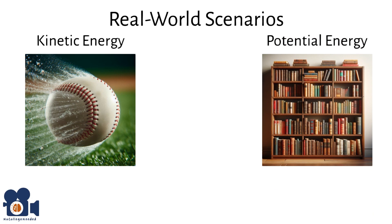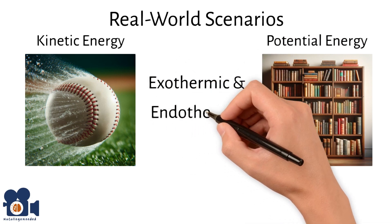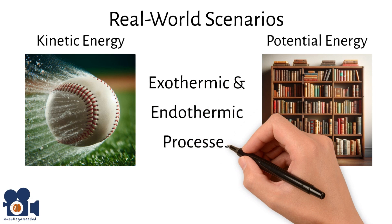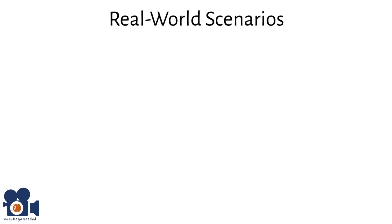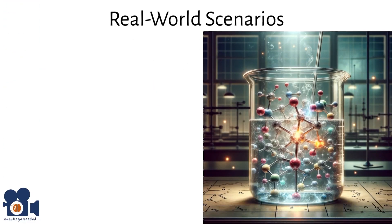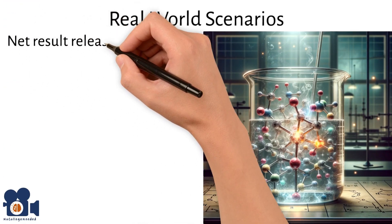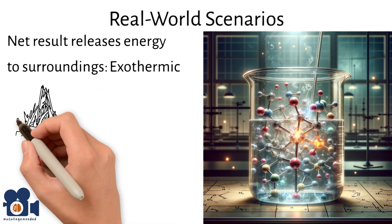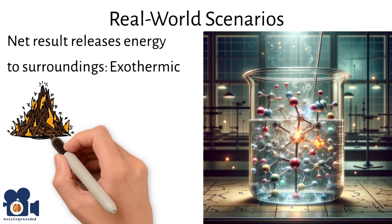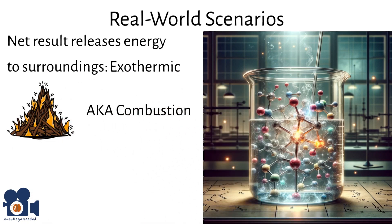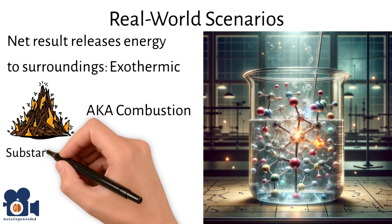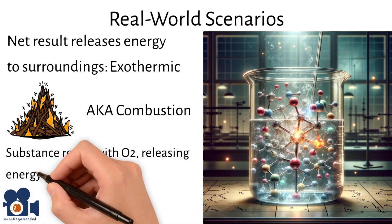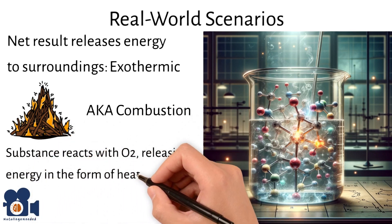Now let's imagine these energies at play within a system with exothermic and endothermic processes. Picture a chemical reaction where bonds are broken and formed. If the overall result releases energy into the surroundings, it's an exothermic process. A great example of this is fire. Fire, also known as combustion, is a type of exothermic reaction which occurs when a substance reacts with oxygen, releasing energy in the form of heat and light.